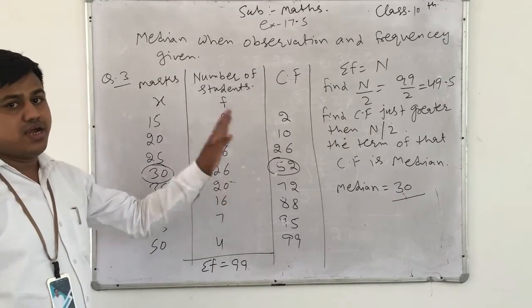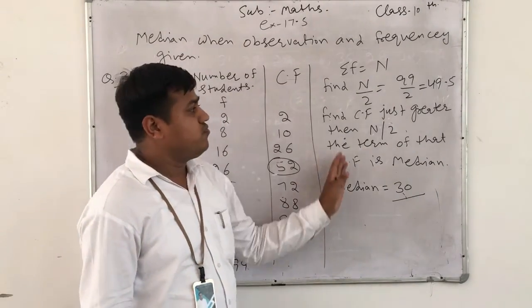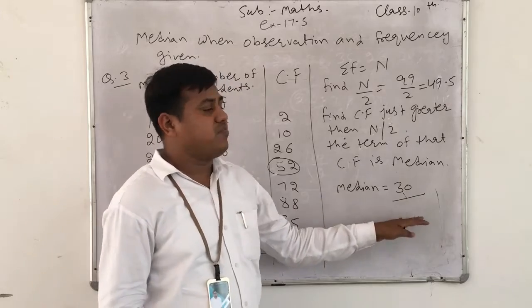So question number 3, 4, 5 are the same identical question. Class marks or observation are given. Firstly, find CF, then follow this procedure. We can easily find the median.